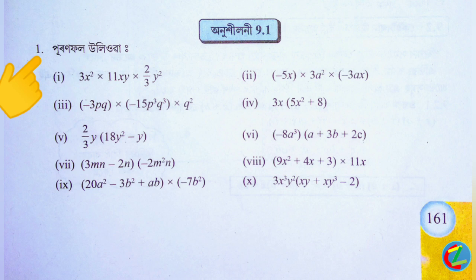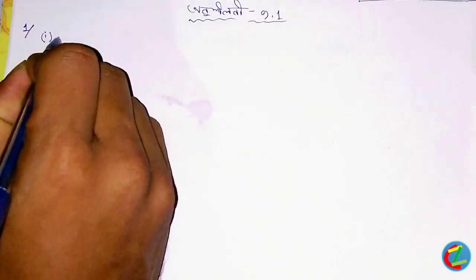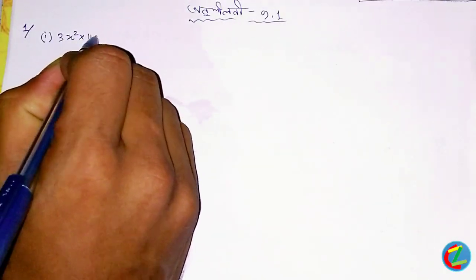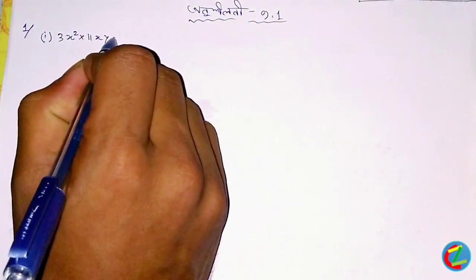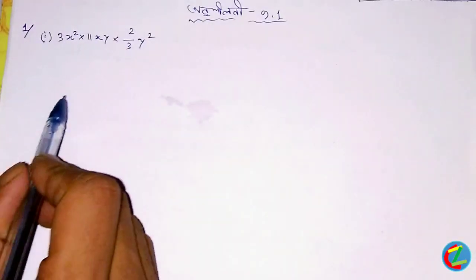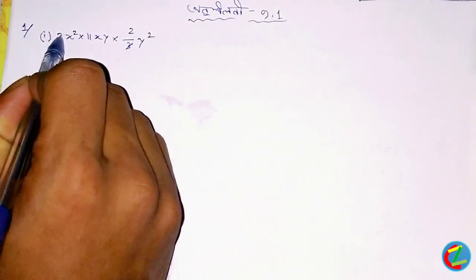The class 8 is 12. This is class 9.1. The class 8 is 10.1. The class 9.1, the class 9 is 10.1. At number two, at number one — x squared into 11xy into two by three.